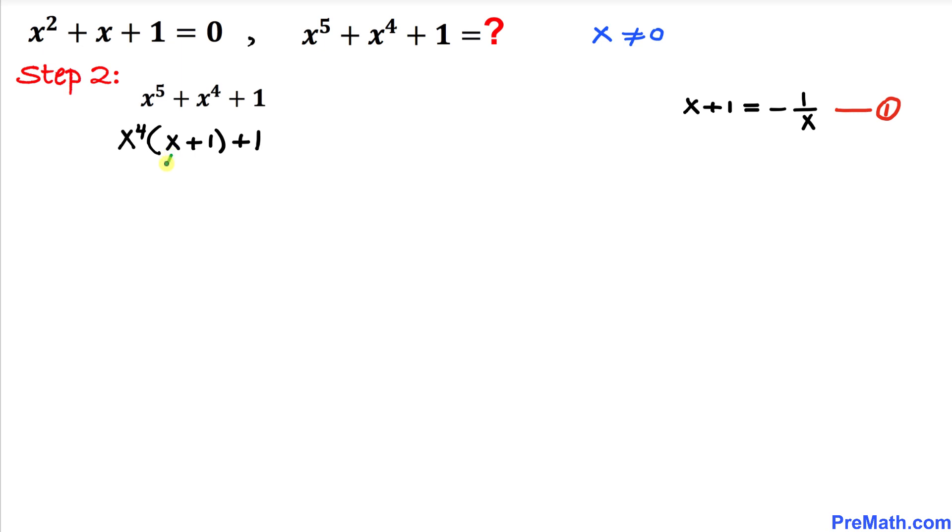Now let's focus on this x + 1. We know from equation 1 that x + 1 equals -1/x. Therefore, I am going to replace this by -1/x. So x⁴ times -1/x, and then plus 1.